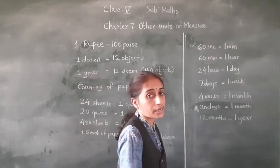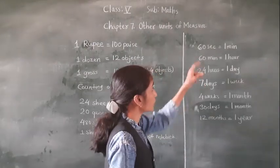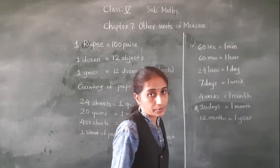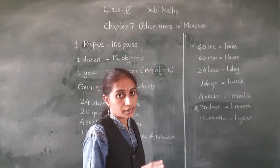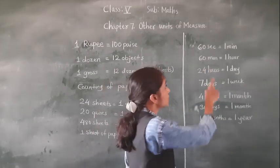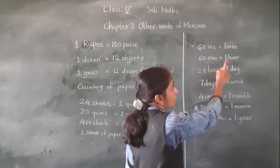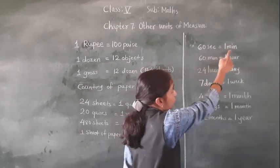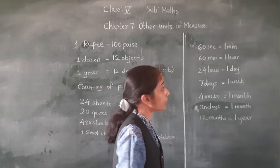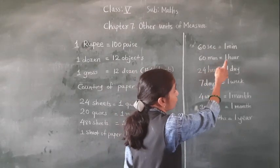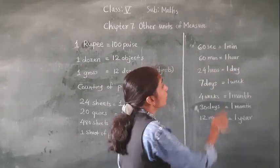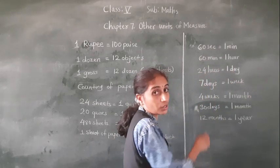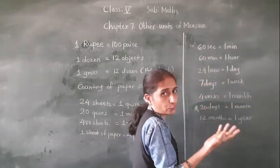Now, this is about time. 60 seconds means 1 minute. 60 minutes means 1 hour. 24 hours is equal to 1 day.